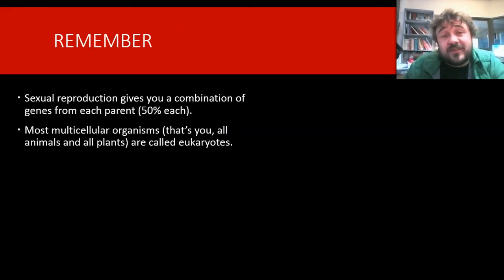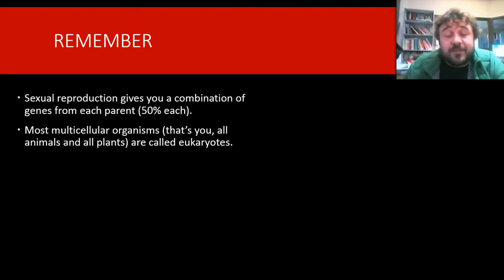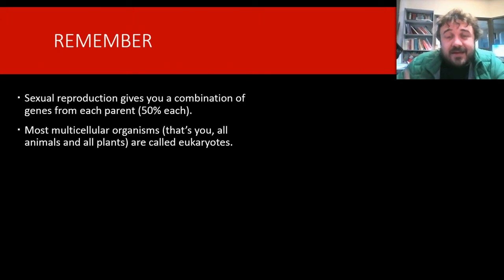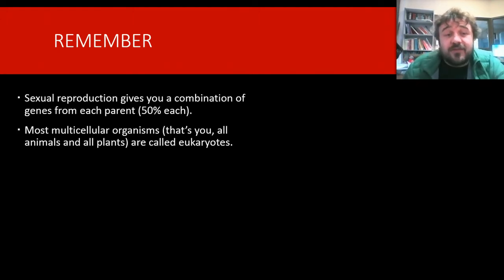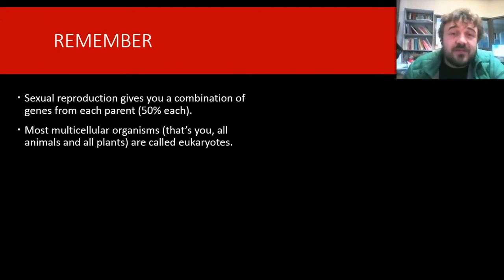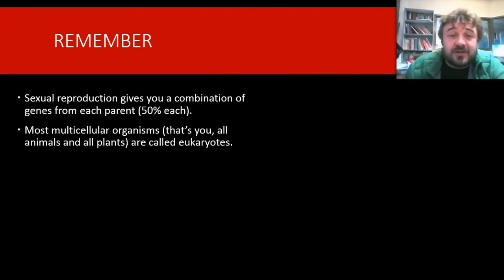So you need to remember that with sexual reproduction, about 50% of your DNA or your genes come from each parent — and when I say about 50%, what I actually mean is exactly 50%, spot on. Most multicellular organisms are eukaryotes, and eukaryote means that you have a nucleus.